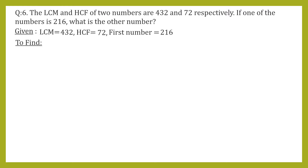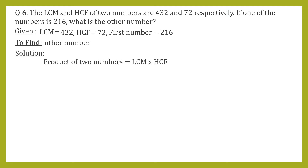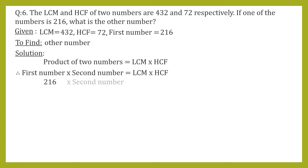We have to find the other number. We'll be using the formula: product of two numbers equals LCM into HCF. Therefore, first number into second number equals LCM into HCF. The first number is 216, the second number is unknown, LCM is 432, and HCF is 72.